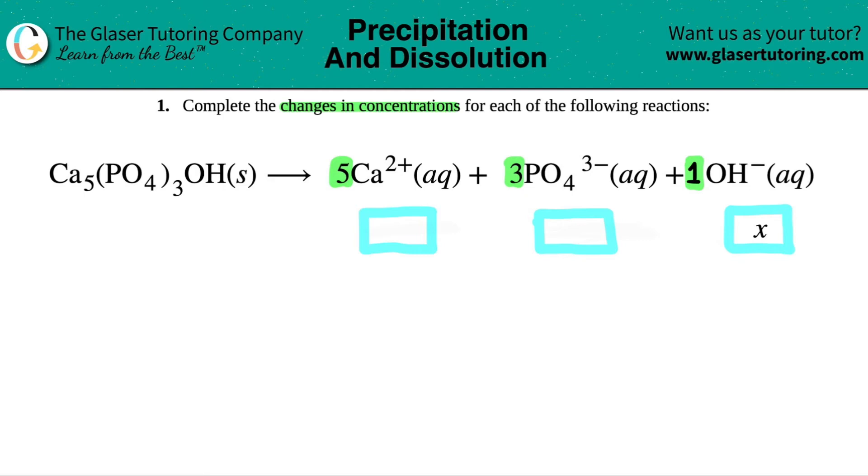But for all the other numbers, you have to put it in there. So for the calcium, the Ca2+, and the PO4-, it has to change by some number, right? And I label it as X because the hydroxide was X.